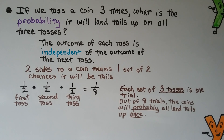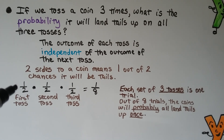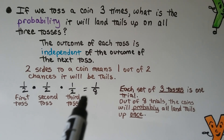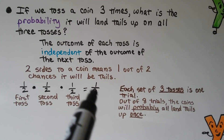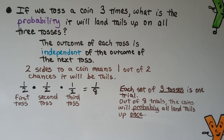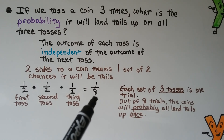If we toss a coin three times, what's the probability it'll land tails up on all three tosses? The outcome of each toss is independent of the next. There are two sides to a coin, so there's a 1/2 chance of tails each toss. So: 1/2 times 1/2 times 1/2 equals 1/8. That's the probability of getting three tails up. Each set of three tosses is one trial — out of eight trials the coins will probably all land tails up once. Because this is probability, it's not guaranteed; it's the probability that it'll happen.